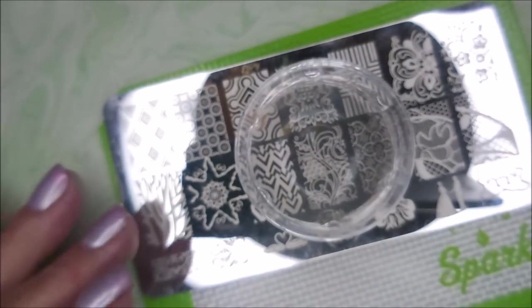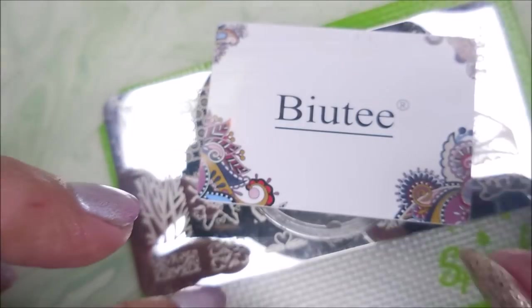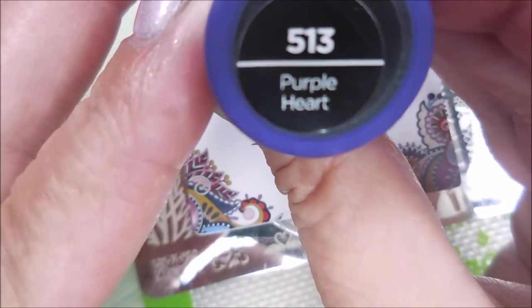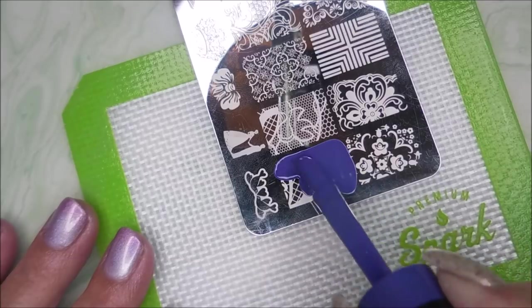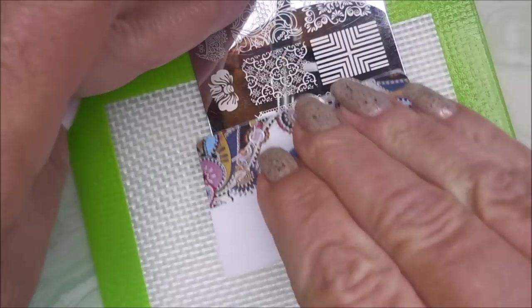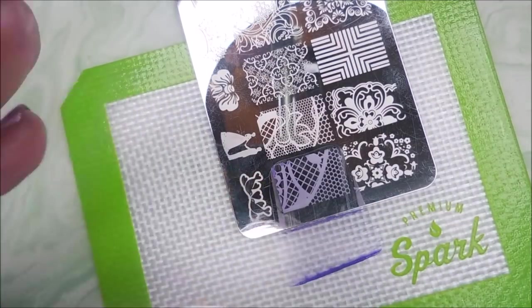I'll be using this plate, BC06, my monocle stamper, beauty scraper, and Sally Hansen's Purple Heart. And that's from the InstaDry Crayon, Crayola Collection. I was having trouble coming up with that. The Crayola Collection.